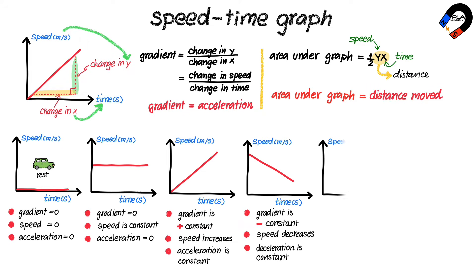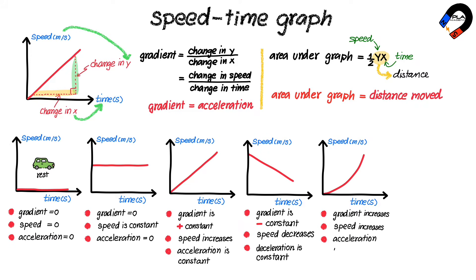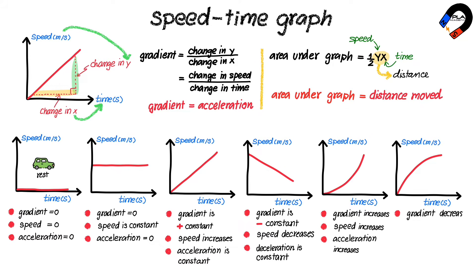A curved graph with an increasing gradient indicates that the object is moving at increasing speed with increasing acceleration. A curved graph with a decreasing gradient indicates that the object is moving at increasing speed with decreasing acceleration.